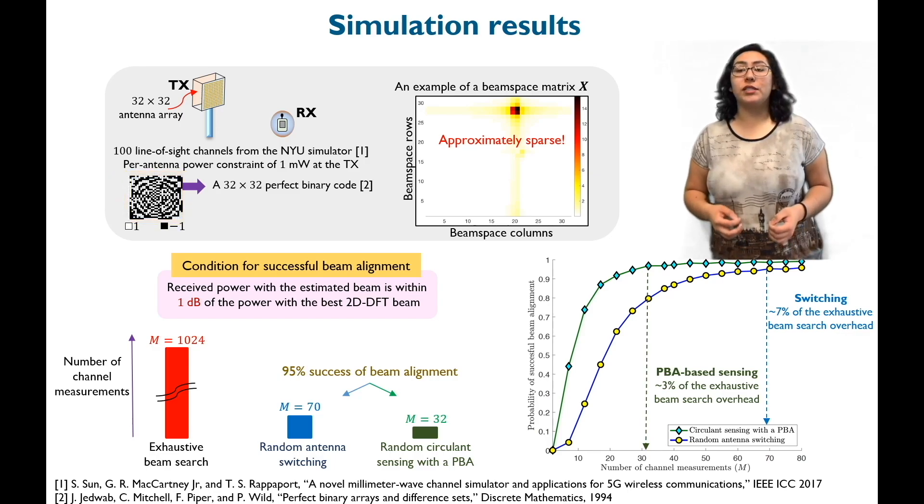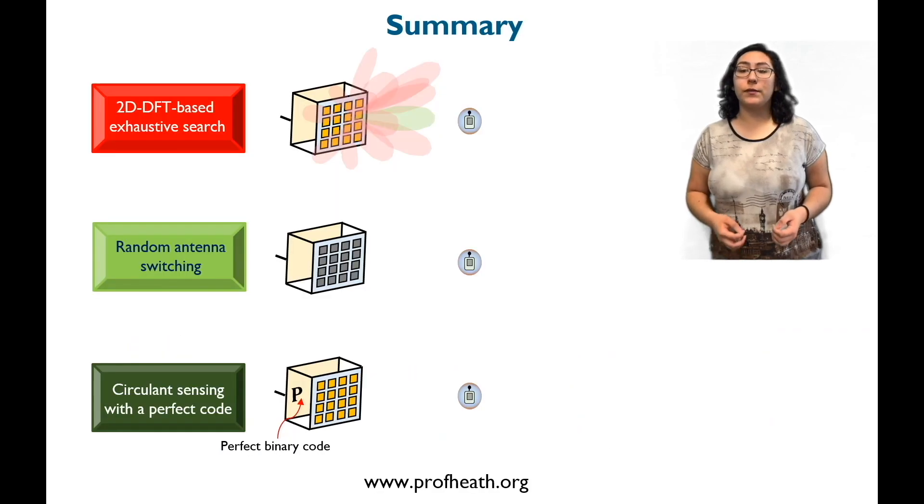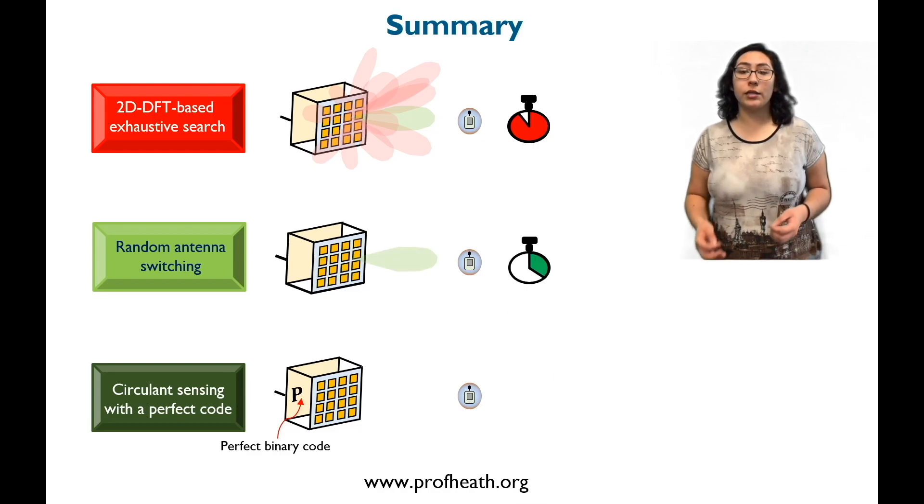I'm now going to walk you through a summary of our video. In this video, we discussed why exhaustive beam search results in a huge training overhead at millimeter wave. We also explained fast beam alignment solutions based on random antenna switching and circulant sensing with perfect binary arrays.